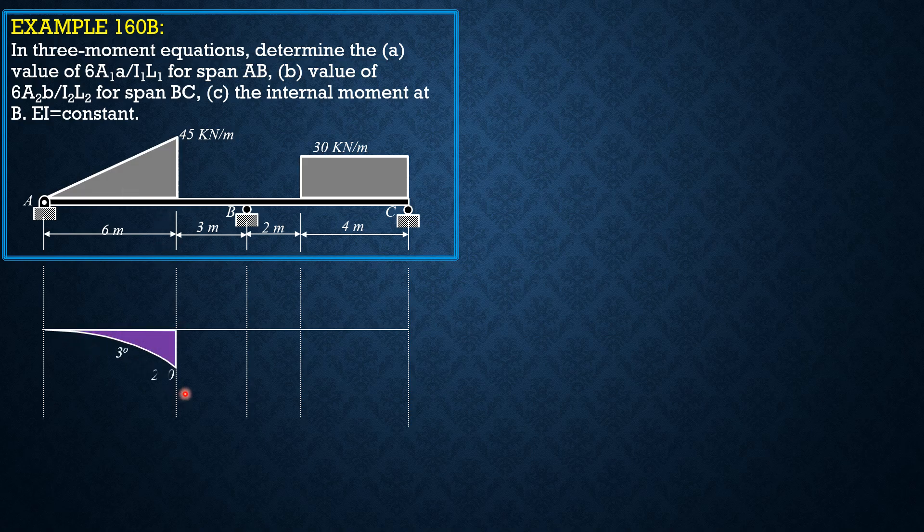And the value is equal to 270. So, we replace this loading with an equivalent load of 1/6 times 45, which is 135 here and a couple of 270. So, that's why 270 is continued at B. And 135 times 3 is equal to 405. The height of this triangle is 405. And this one is 270 rectangle.